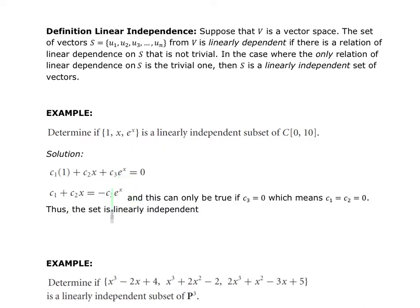Moving the exponential term to the other side, because it is not a polynomial, the only way this can be true is if c3 equals zero. Setting c3 to zero, I have c1 plus c2 times x equals zero, which means c1 must equal c2, and the only way that works is if they're both also equal to zero. So this set is linearly independent.